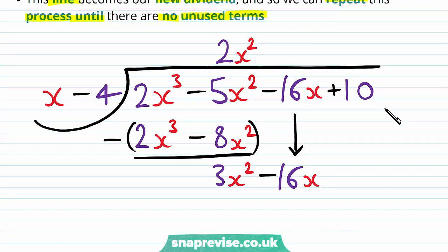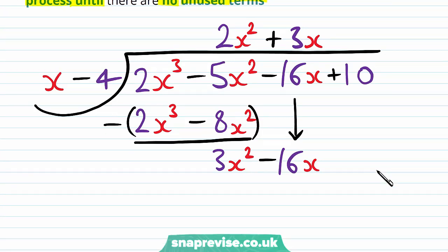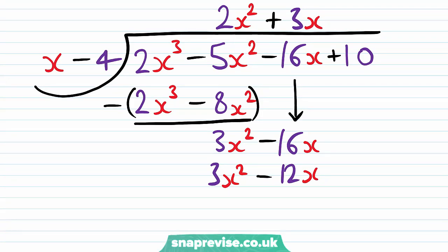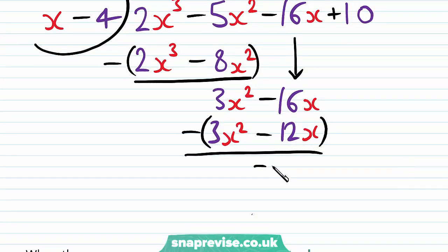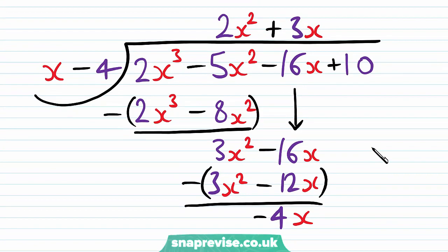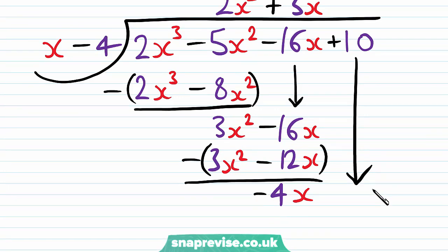So we have our new dividend, 3x² − 16x. We take the first term of our dividend and divide by the first term of our divisor: 3x² over x is 3x, so we get a +3x here. Then we multiply our new term of the quotient by the divisor, giving us 3x² − 12x. Then we subtract this from the previous line, which ensures that we cancel out our highest index term, and we remain with −4x. Then we bring down our next unused term, the +10, so we get a +10 here.